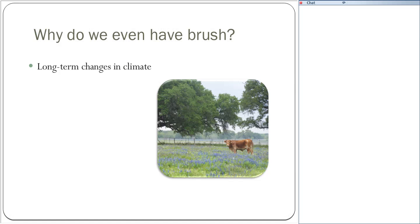First I want to start out with why do we even have brush? It seems like we spend a lot of time thinking about how to manipulate brush into patterns that we want, but I'd like to stop and think about why we have so much brush in the first place. Long-term changes in climate have created severe droughts like we experienced starting in 2011. When we have severe droughts, we create more bare ground and leave more opportunity for seeds to germinate. Species such as honey mesquite put on more beans during drought as a life strategy, which may exacerbate the problem.